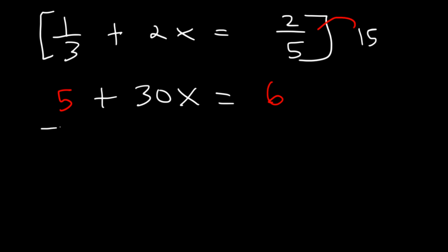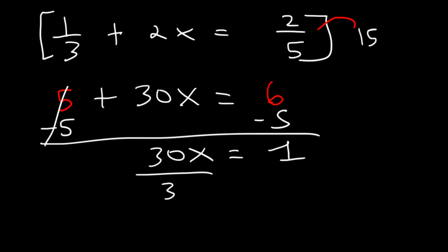Now let's subtract both sides by 5. So 30x is equal to 1. Now our last step is to divide by 30. So x is a fraction. It's 1 over 30.